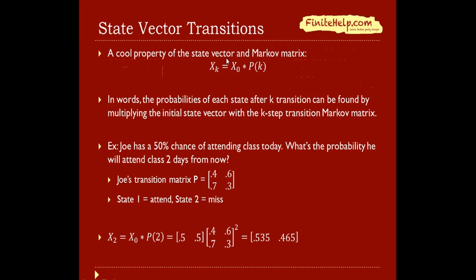Another cool property of the state vector in the Markov matrix is that when you have the state vector after k transitions, you can simply multiply the initial state vector times the Markov matrix of k transitions. In other words, the probability of each state after k transitions can be found by multiplying the initial state vector with the k-step transition Markov matrix.